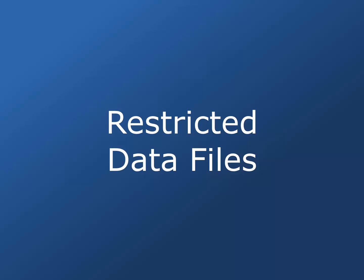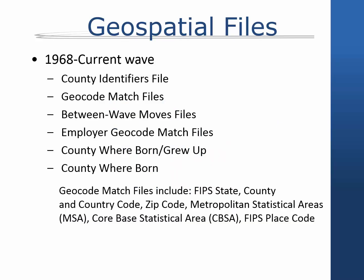PSID provides approved users with geographic identifiers that make it possible to link PSID to contextual data from secondary sources such as the census. Variables that indicate geographic location below the state level are restricted. There are six types of restricted geospatial files: the county identifiers file, the geocode match files, the between wave moves files, the employer geocode match files, the county where born or grew up files, and the county where child born file from the childbirth and adoption history. The county identifiers file and the geocode match files contain one record per family unit, reflecting the family's location at the time of their interview. The between wave moves files have up to six records for each family unit, reflecting the moves between waves experienced by the head or reference person.